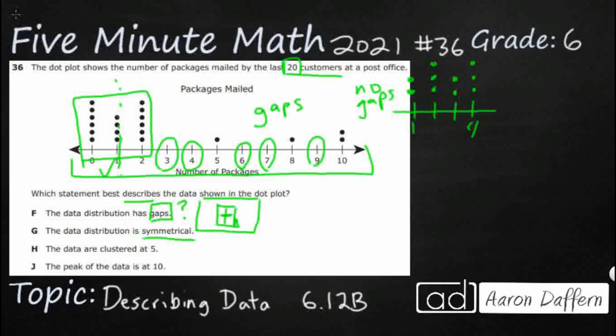But the data distribution actually folds right here at this 5, and it is not symmetrical because you have to include this 5, this 8, and these 2 up here at 10. So if we could just look at a part of it, we'd be good, but we have to look at the entire thing. So G is not going to be our answer.